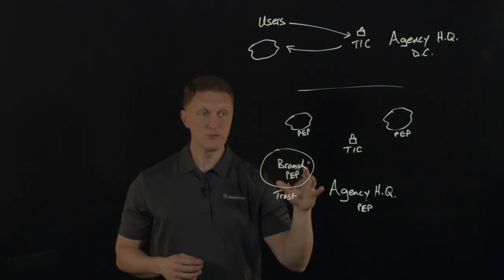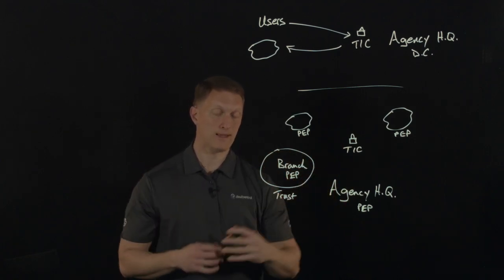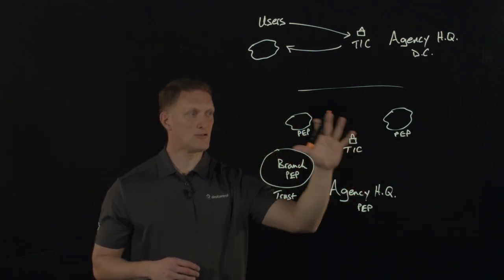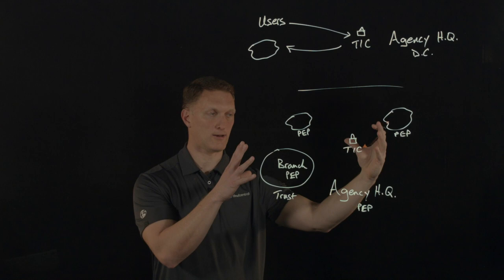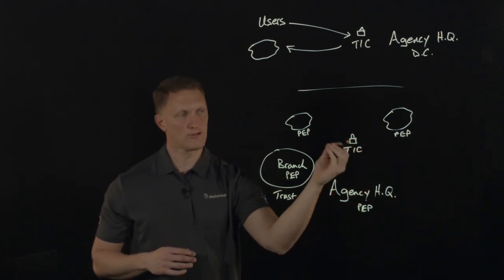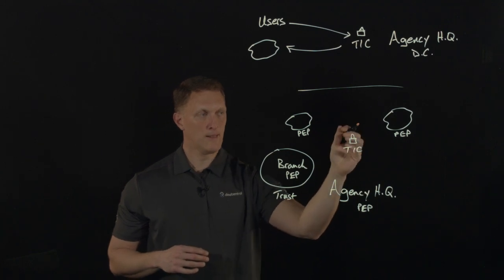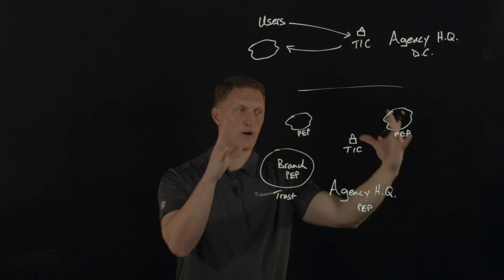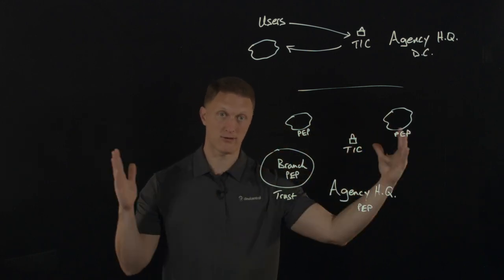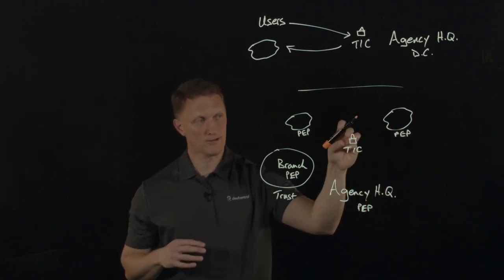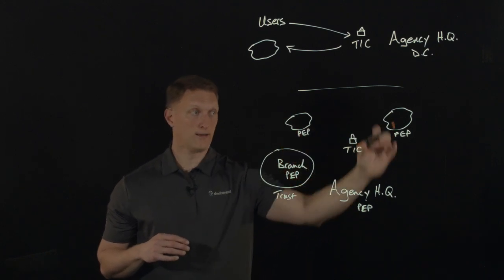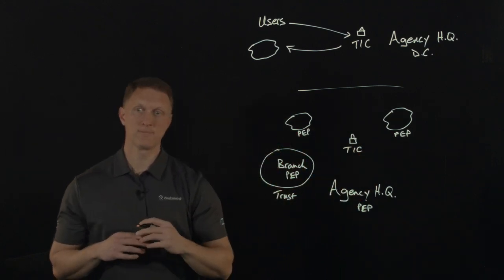F5, by the way, has a host of technologies that can allow for a zero trust model to be implemented. So that's the nature of the distributed architecture of TIC 3.0, which by the way, there's the TIC here in the middle. There are certain security capabilities that are going to be implemented or used regardless of where you are located. So these are the more general security capabilities that will apply across the board no matter what. So you can still have those defined while you have the more specific security capabilities defined at each of the distributed locations.